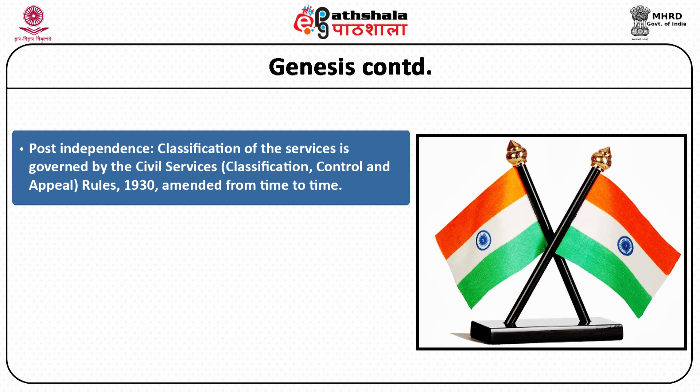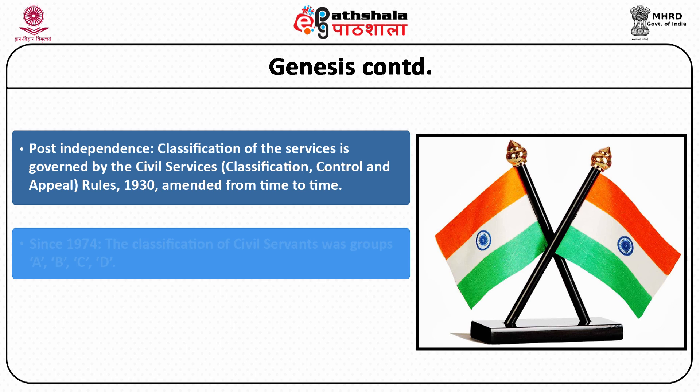After independence also, we continued with the same rules — that is, civil services were governed by the Civil Services Classification, Control and Appeal Rules of 1930 — but they were amended from time to time. From the 1970s onwards, the civil services were grouped into Group A, Group B, Group C and Group D.